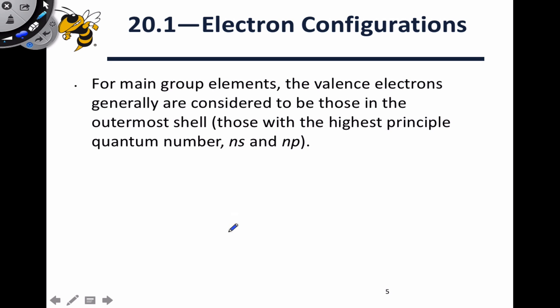One important way in which the transition metals differ from the main group elements is in their electron configurations and how we consider their valence electrons.